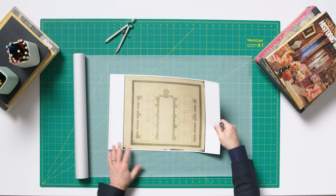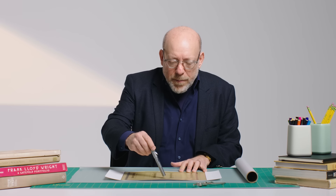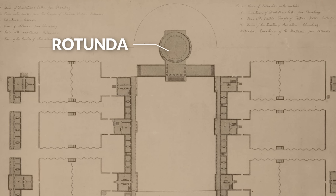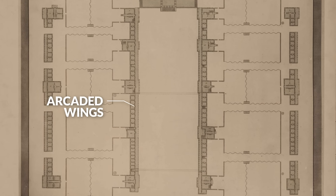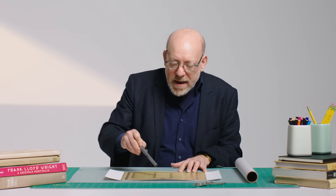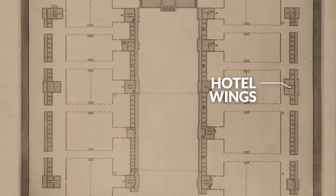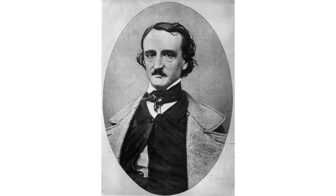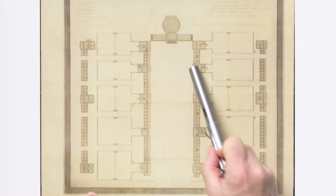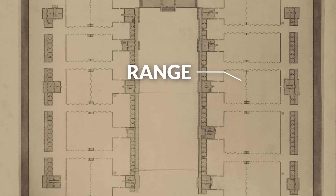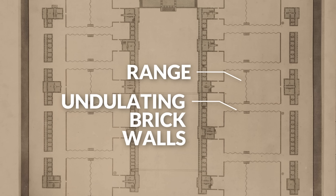Looking at the plan of the university: the Pantheon-like rotunda serves as the library. There were arcaded wings built around the stepped lawn in the center. Jefferson also built two outer wings called the hotels where people lived — Edgar Allan Poe lived there when he attended the university. Between these wings and the hotel wings was called the range, filled with gardens, and within it Jefferson created his famous undulating brick walls.